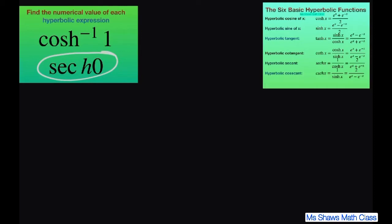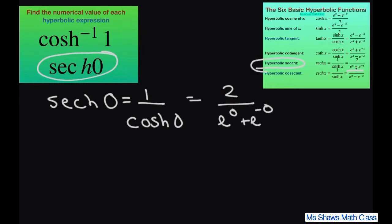This can be written as hyperbolic secant of 0 is 1 divided by hyperbolic cosine of 0. And so using my formula here, this gives me 2 divided by e to the 0 power plus e to the negative 0 power using the definition of hyperbolic secant. So I'll just write it up here so you can see it a little bigger.